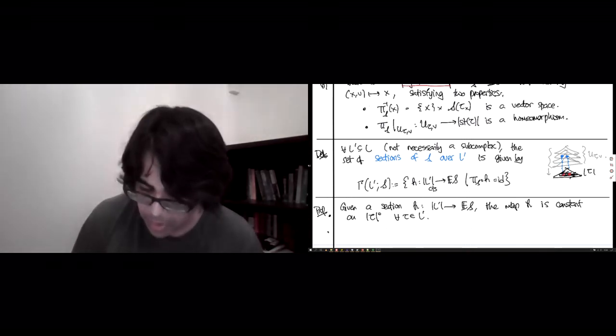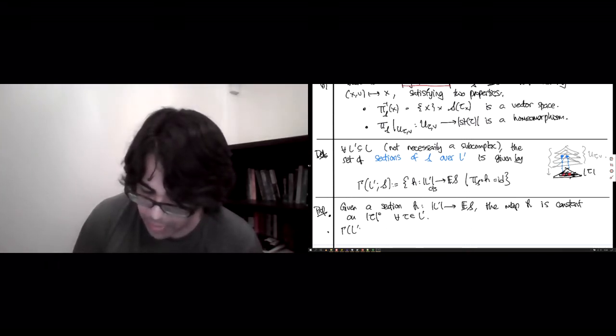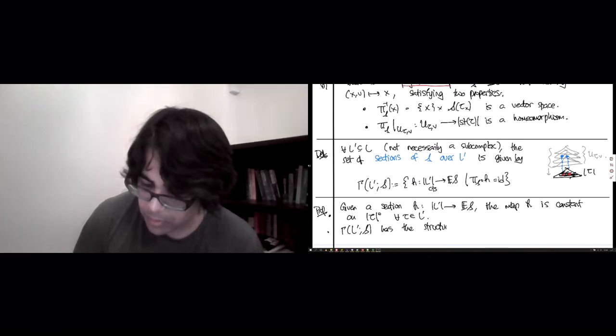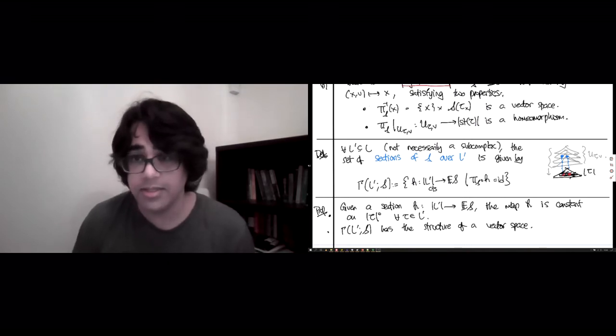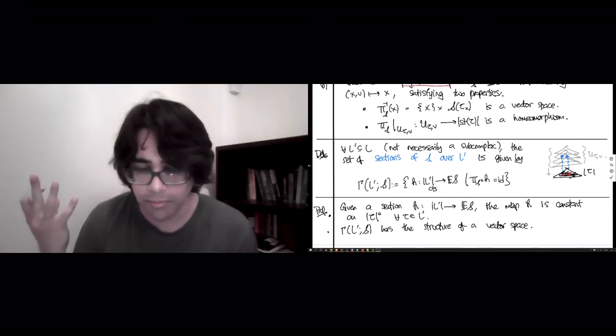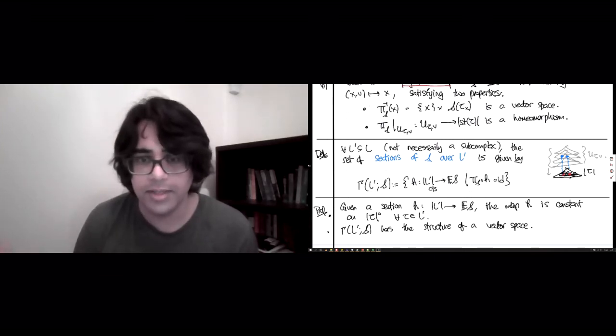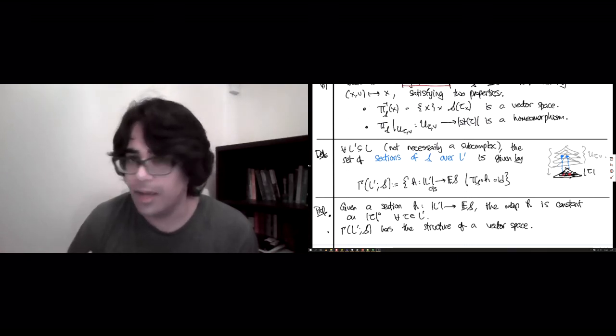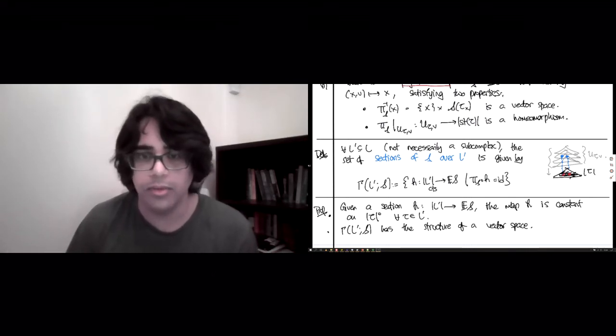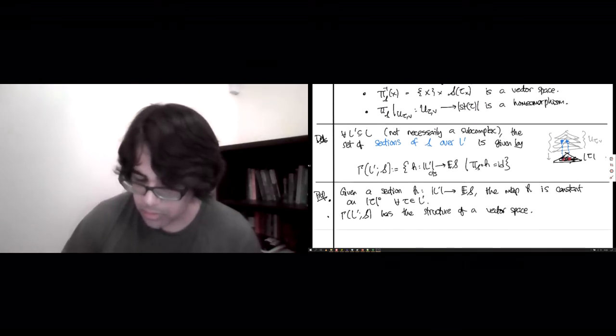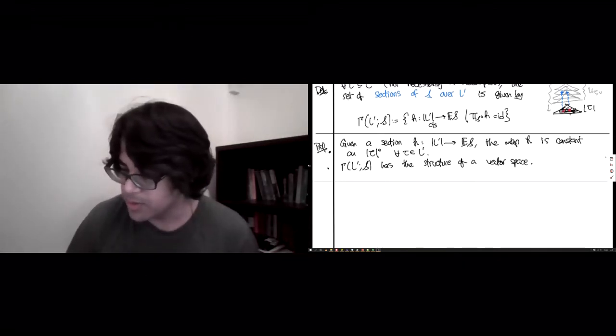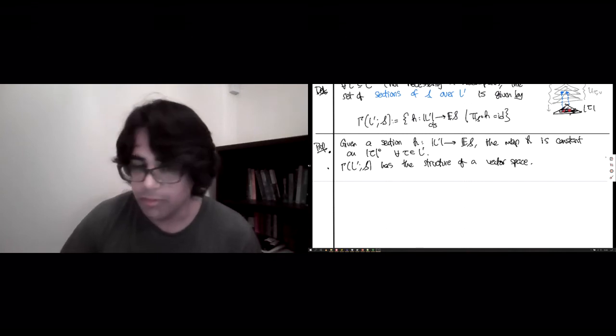So this is a consequence of continuity, that this h cannot assign different vectors to different points in the geometric realization which lie in the interior of the same simplex. So a clue as to why this is the case, you can find in the diagram over here. If you had another point on the interior of the same simplex, you'd have to send it to the same copy in the fiber, which is a disjoint union of these u tau v's by continuity. Otherwise, this connected set would break into two, which a continuous map is not allowed to do. And therefore, it both must be assigned the same v value. And a simple consequence of that is that gamma L prime s has the structure of a vector space.